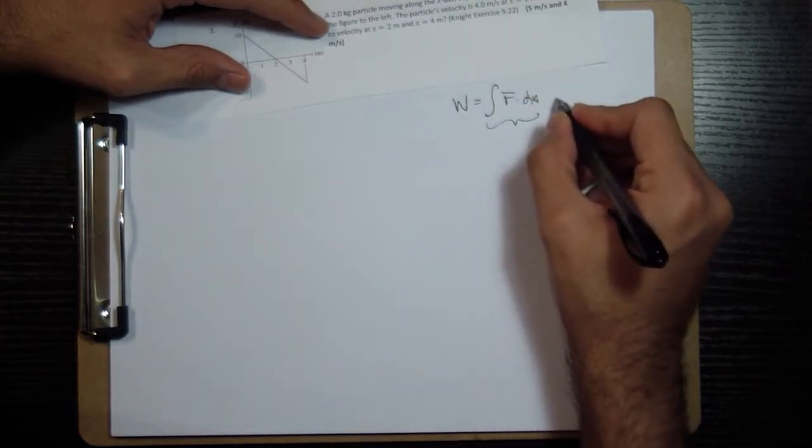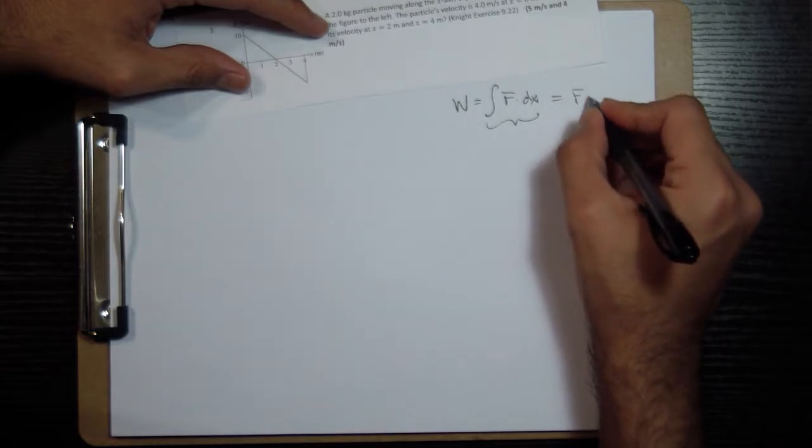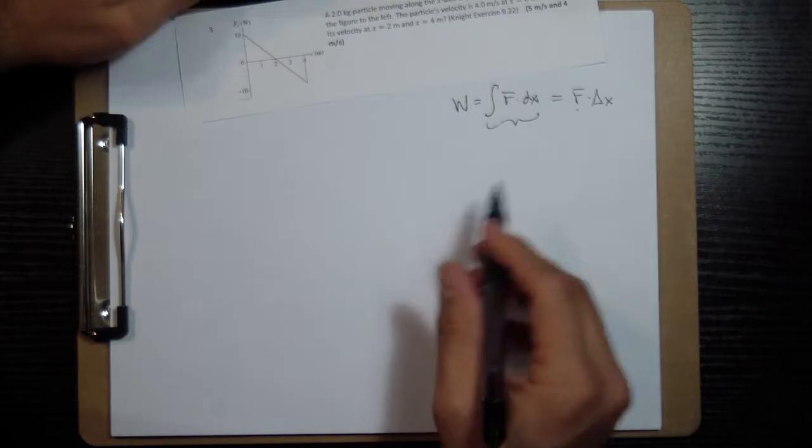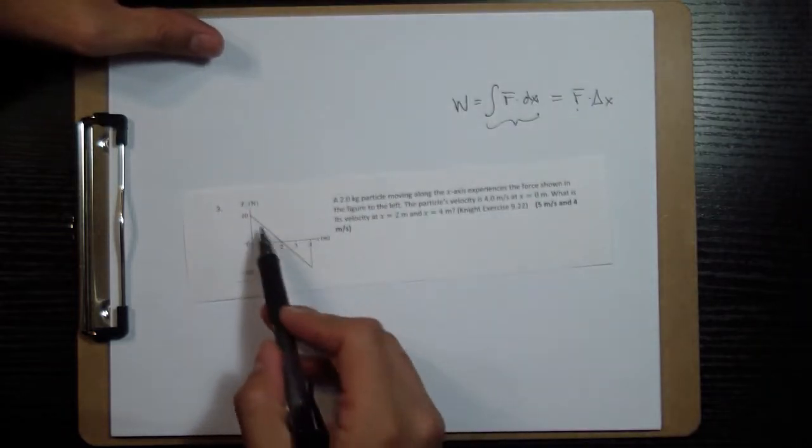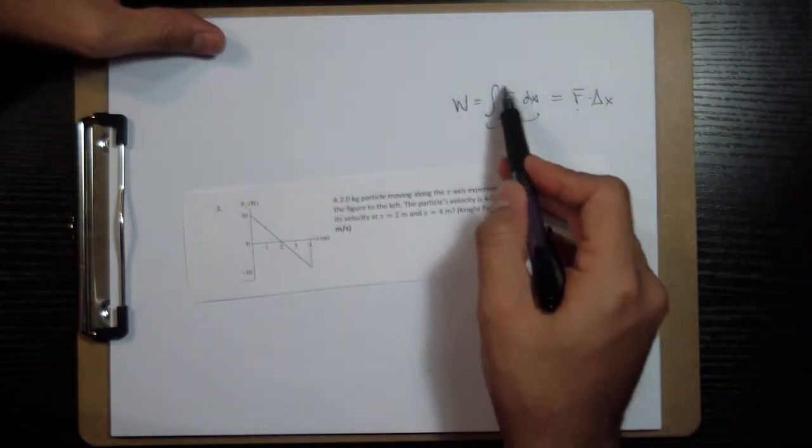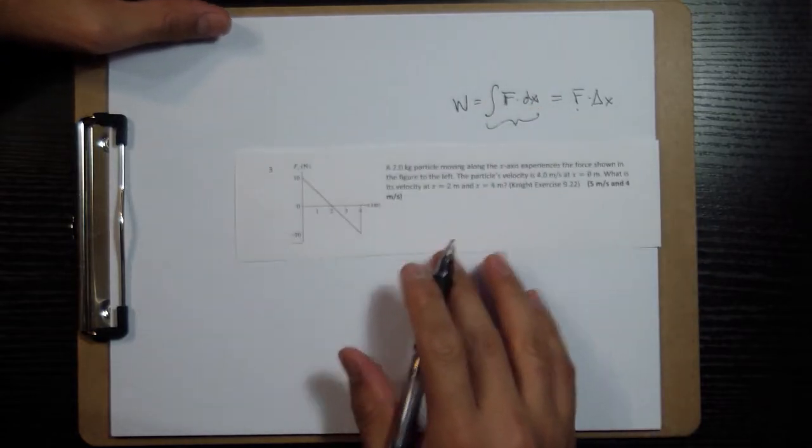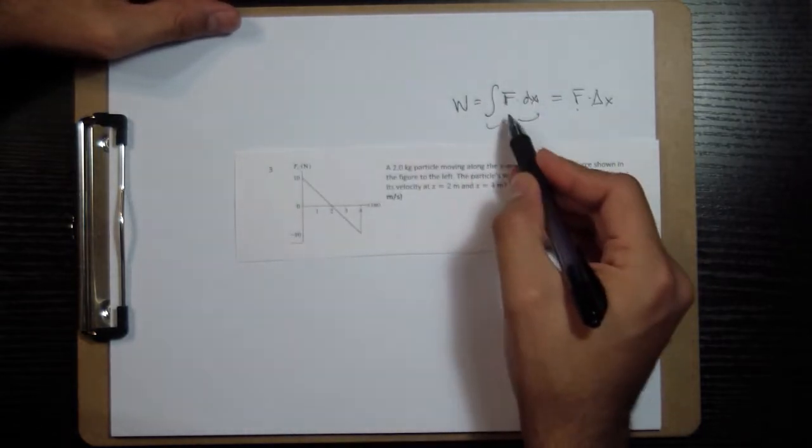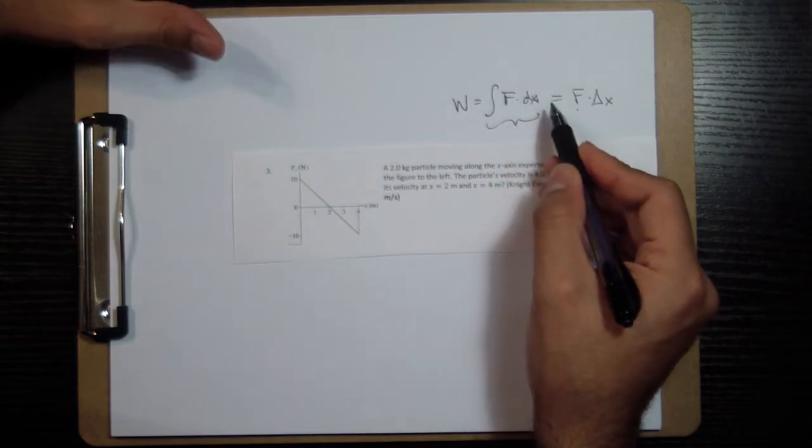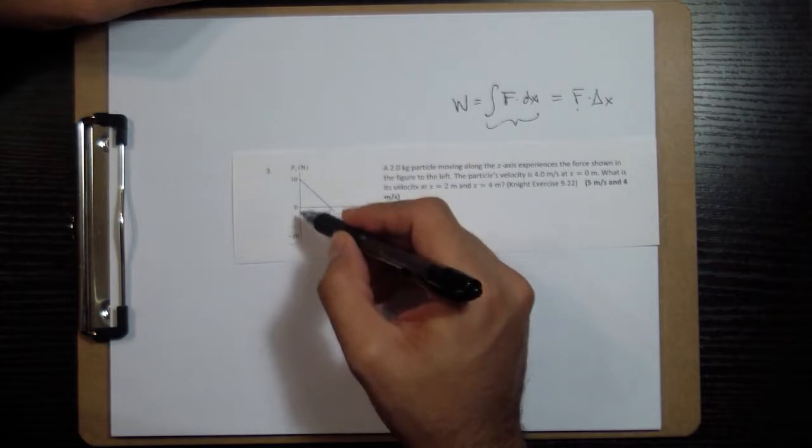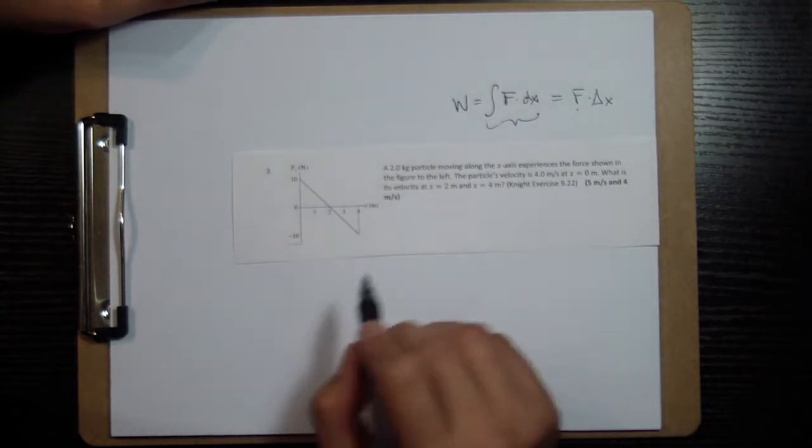This is the integral equation, or this is sometimes force times delta x if the force is constant throughout the trip. In this case the force is not constant, so we're thinking about this as an integral where the force can change over time. But of course, because this is an integral and we don't have an equation for f, we have a graph, what we can just do is calculate the area of those triangles to see what's going on.